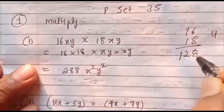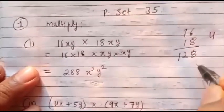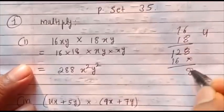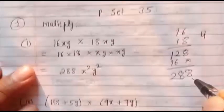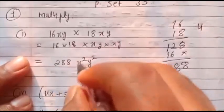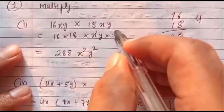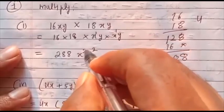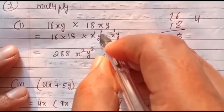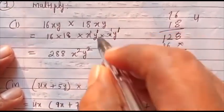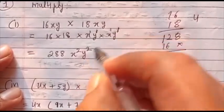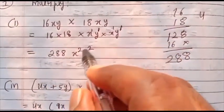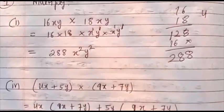16 multiplied by 18 equals 288. For the variables: x has power 1 here and power 1 here, so x raised to 1 plus 1 equals x². Similarly y to the power 1 plus 1 equals y². So the answer is 288x²y².